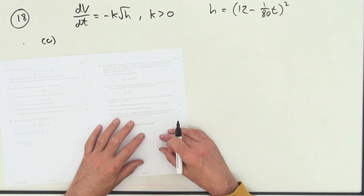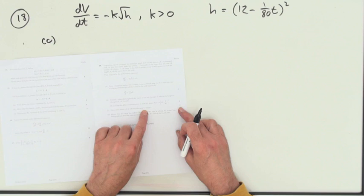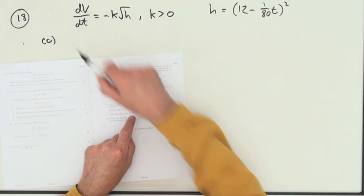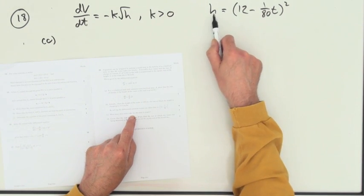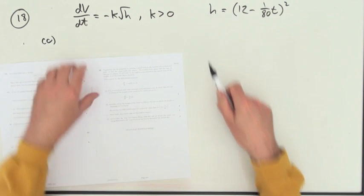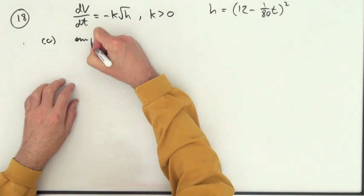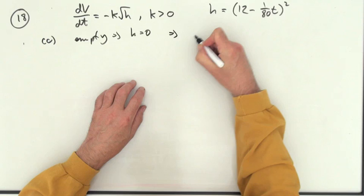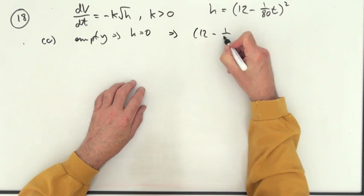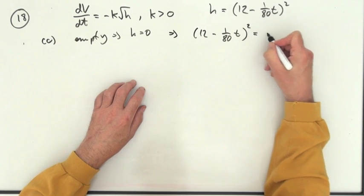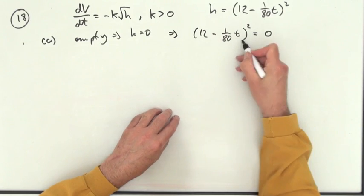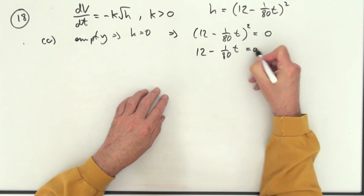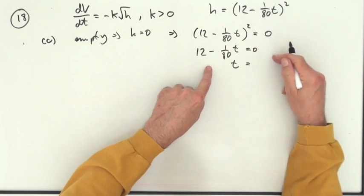Part C, how many days will it take for the tank to empty? Well, for two marks, unless I'm missing something, is that not just going to be the tank will be empty when the height of the water in it is 0? So that means that 12 minus 1 upon 80 T squared equals 0. Meaning that this part must be 0. So 12 minus 1/80 of T is equal to 0. So T is equal to 12 times 80.